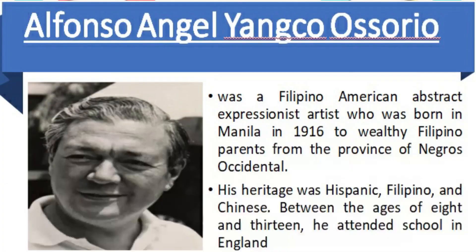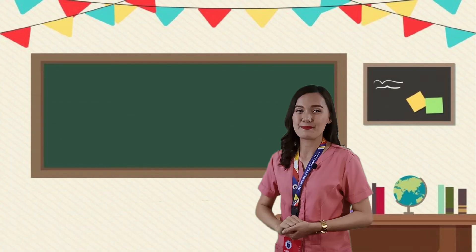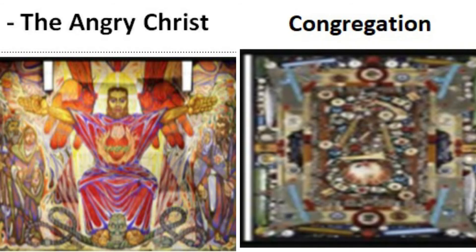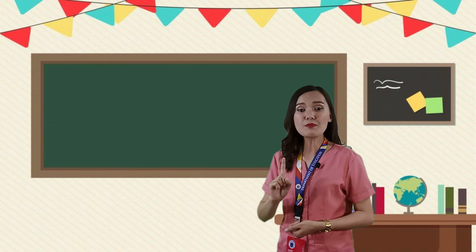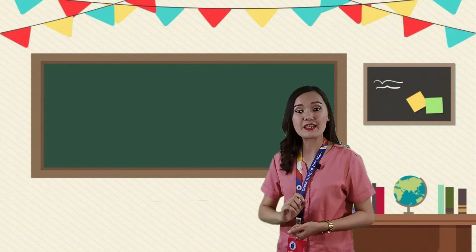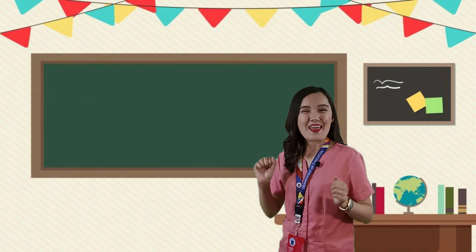Next, we have Alfonso Angel Ossorio, also known as Yanko. He was a Filipino-American abstract expressionist artist who was born in Manila in 1916 to wealthy Filipino parents from the province of Negros Occidental. His heritage was Hispanic, Filipino, and Chinese. Between the ages of 8 and 13, he attended school in England. His artworks include The Angry Christ and Convocation — a mural commissioned by the Parish of St. Joseph in Victoria City, Negros Occidental, Philippines, for the reconstruction of the church.